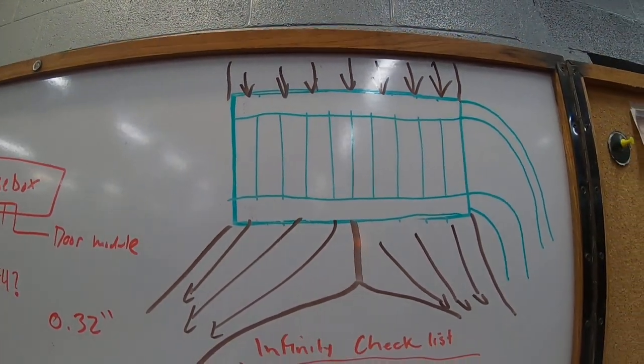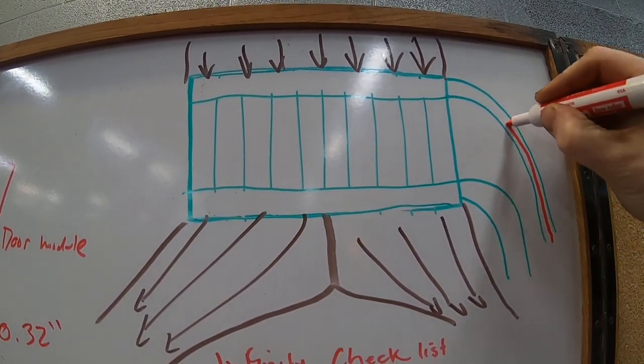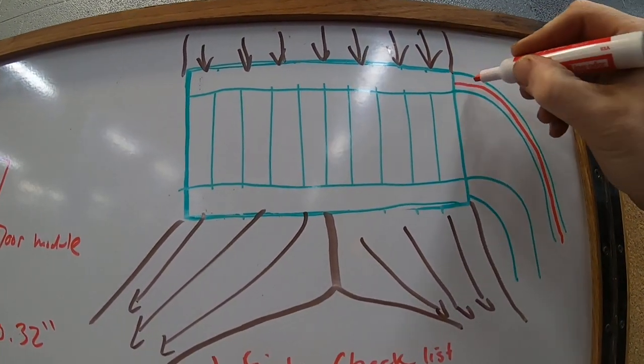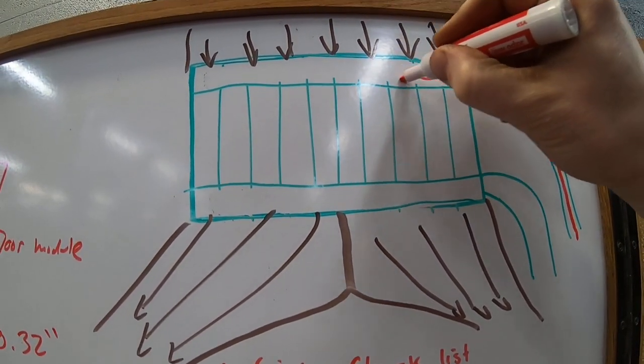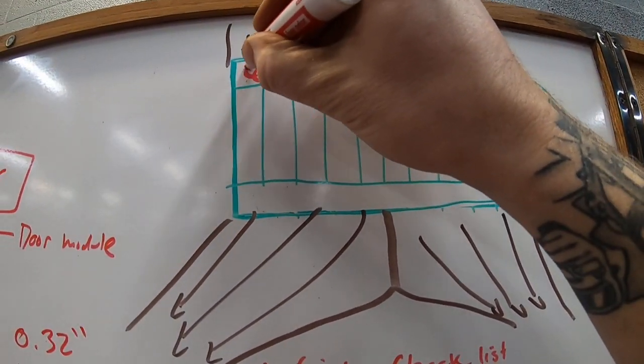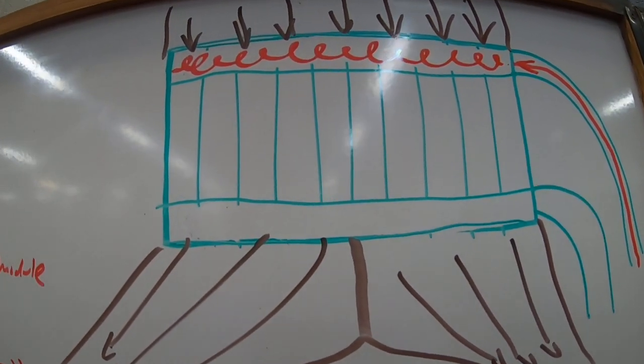This is how the heater core is supposed to work. Hot water from the engine or coolant comes into here and then it goes through this top part of the tank. So this in green here is the heater core itself. It's basically a mini radiator.